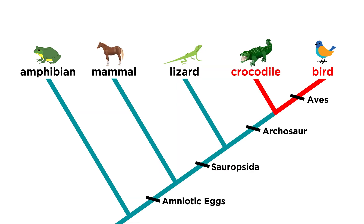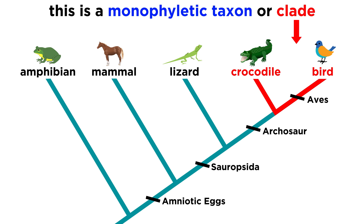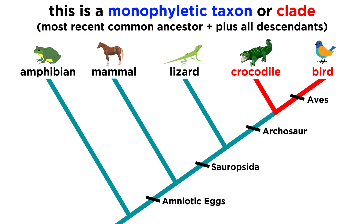Now if we were to group the crocodiles and the birds together, we would get a monophyletic taxon, also known as a clade. The crocodiles and the birds are the two most closely related organisms in this cladogram. By grouping them together, we are including all extant organisms that fit these categories and their descendants, as well as all of their ancestors going back to and including the most recent common ancestor of the two branches.